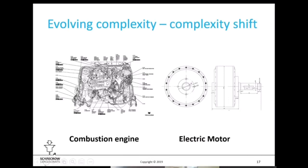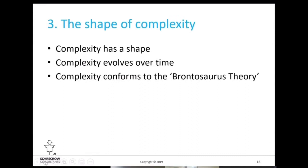Rather than just saying complexity has increased, we're seeing a shift in complexity away from traditional mechanical and electromechanical systems into software and electronic controls, smart sensors, and sophisticated headlights. So when we talk about how complex a system is, we really need to ask: where does the complexity live in our system? That's where things are more likely to go wrong. Identifying the complexity is very much context dependent because different stakeholders view the complexity in different ways.